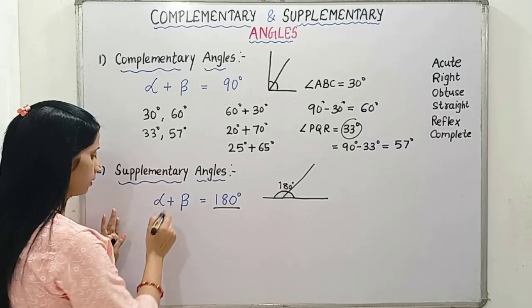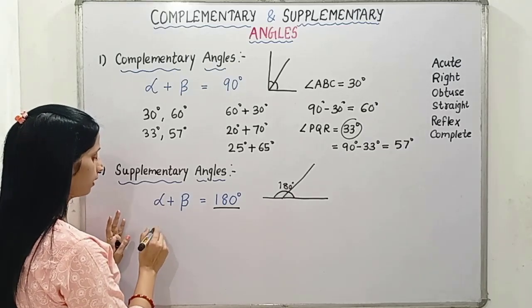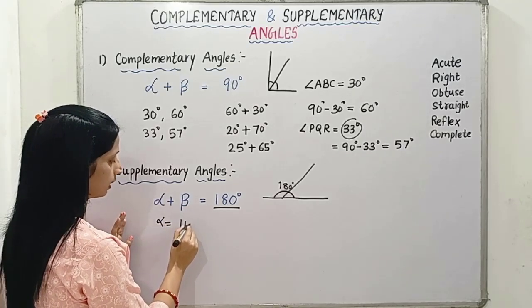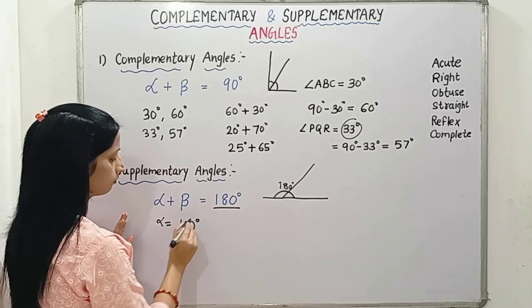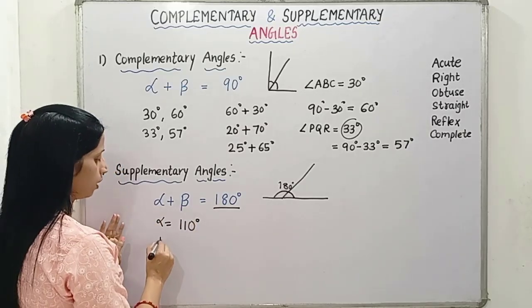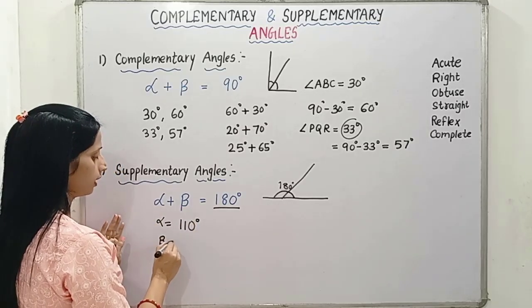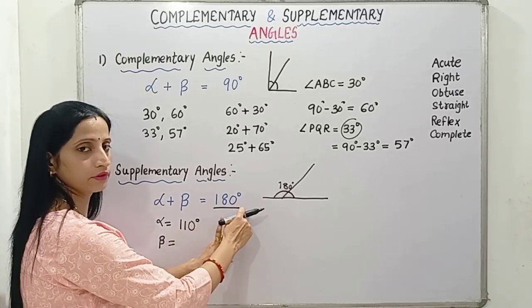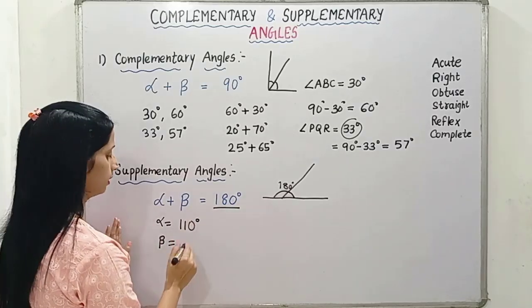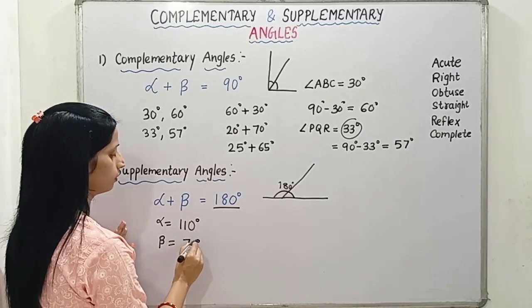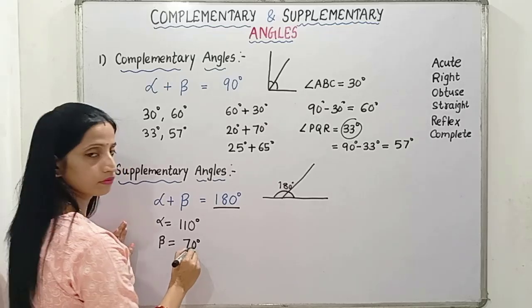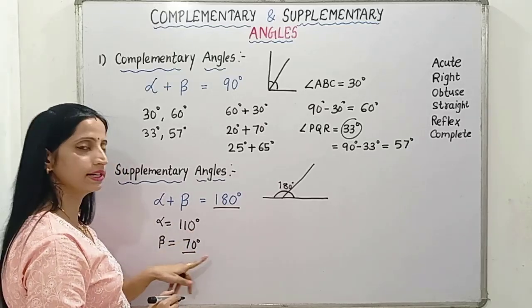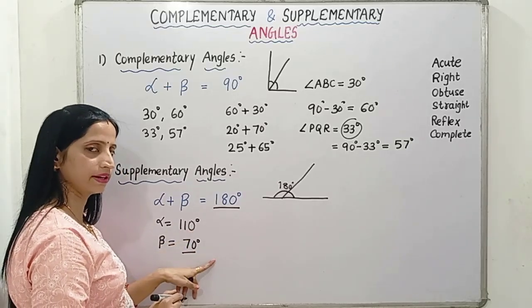For example, one angle is given: alpha is given 110 degrees and you have to find out beta. How will you find out another angle? You will subtract this from 180 degrees and you will get 70 degrees. So this means 110 degrees and 70 degrees are supplementary angles.